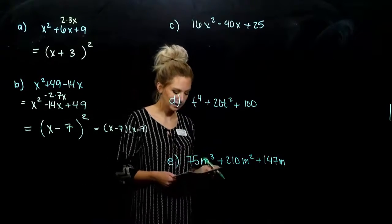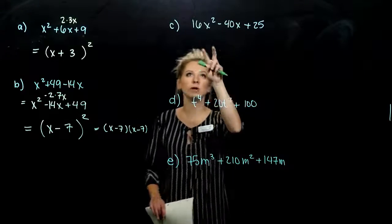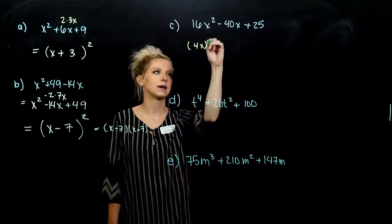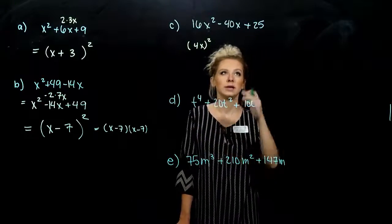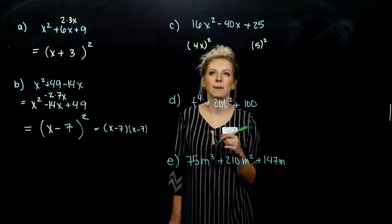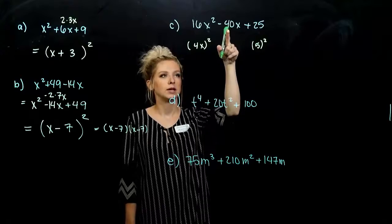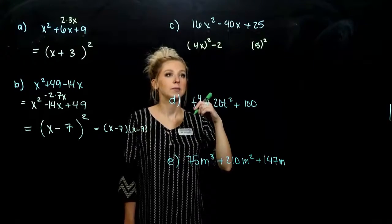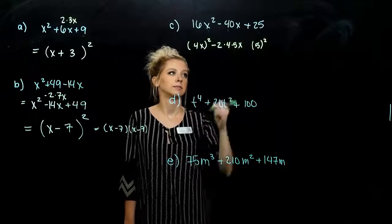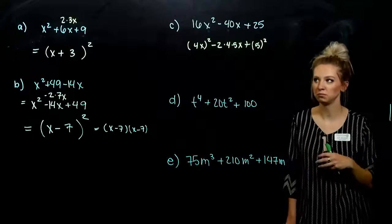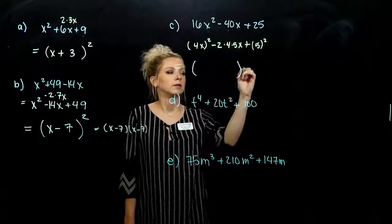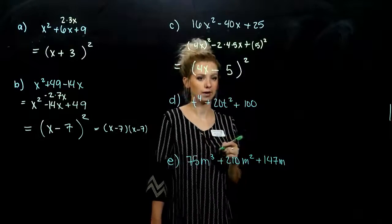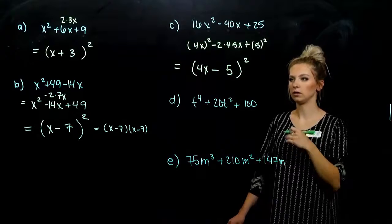Something a little bit bigger now — the concept is still the same. What is the square root of 16x squared? It's helpful to break it down: 4x squared gives me 16x squared. And 25 is a perfect square of 5. So I want to check that I can break up the middle term into 2 times 4x times 5. If I take 2 out of 40, I'm left with 20, which can be broken up into 4 and 5. It is a perfect square trinomial, and it factors into the binomial: square root of the first term is 4x, subtraction in the middle, and the last term is 5.